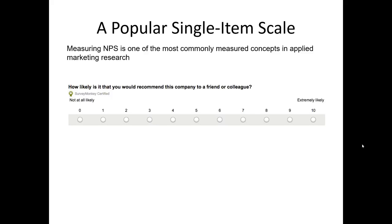Let's take a look at a popular single-item scale. The Net Promoter Score Scale is one of the most common scales that marketers use in the world today. You've probably seen this scale and responded to it in a recent survey. The NPS scale question always comes in this format: How likely is it that you would recommend this company to a friend or colleague? Sometimes where it says company, it could actually be the name of the company, a brand, a product, a service, or an experience.